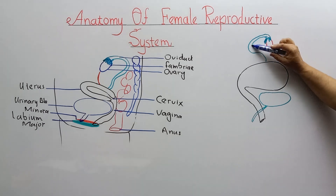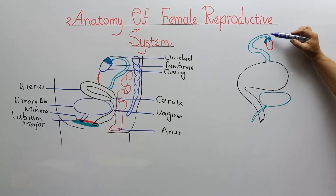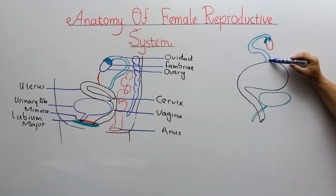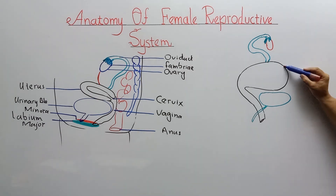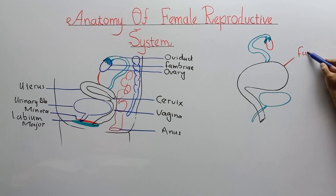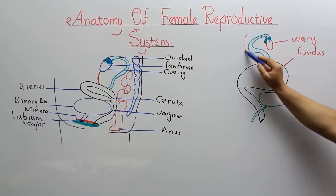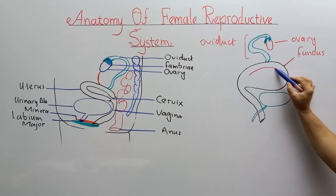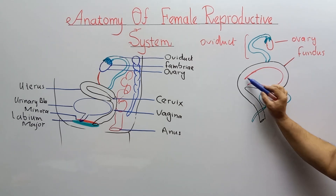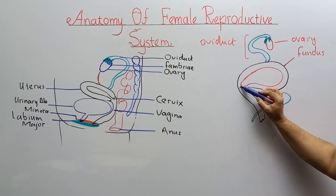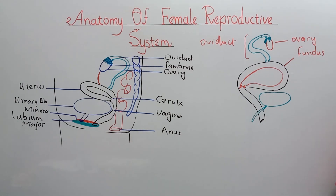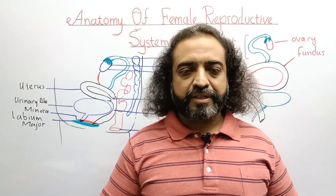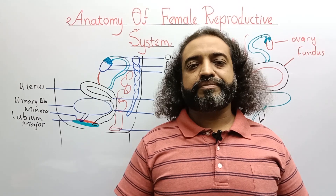Here is the ovary, fimbriae, and ampulla. The infundibulum is the first and longest portion — about 10 centimeters long. This dome-like structure is the fundus, and here is the fallopian tube or oviduct. The uterus is the house of the fetus where the developing baby develops, and the cervix is the neck-like entrance. Today we learned about the anatomy of the human female reproductive system. In the next lesson we will learn about hormonal control. Thank you.